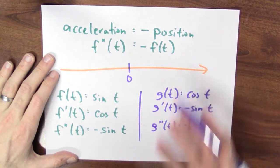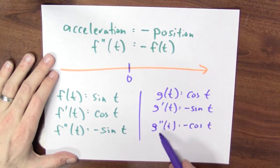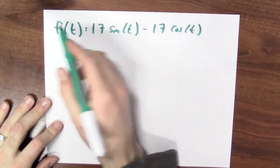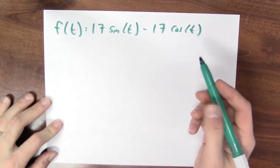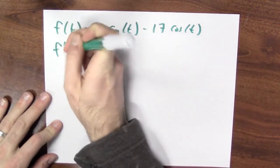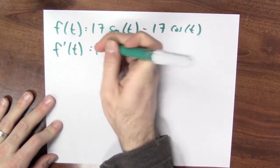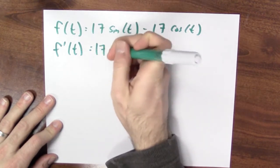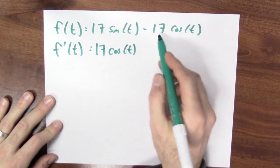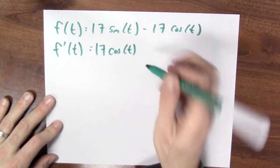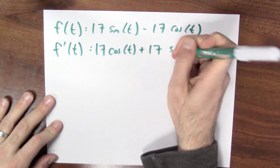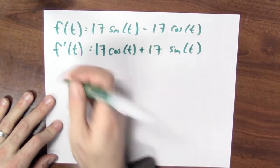So cosine is another example of a function whose second derivative is negative itself. We know even more functions like this. For instance, what if f were the function f of t equals 17 sine t minus 17 cosine t. Well, then the derivative of f would be 17 times the derivative of sine, which is cosine, minus 17 times the derivative of cosine, but the derivative of cosine is minus sine, so this is plus 17 sine t.